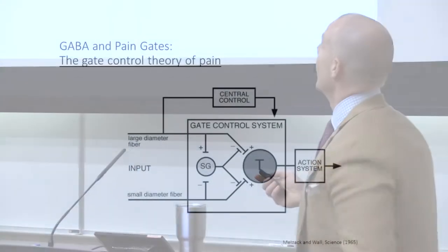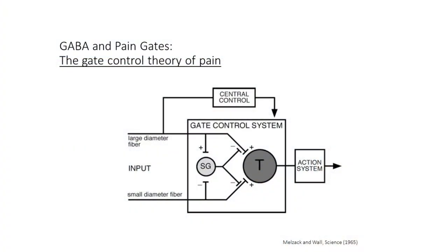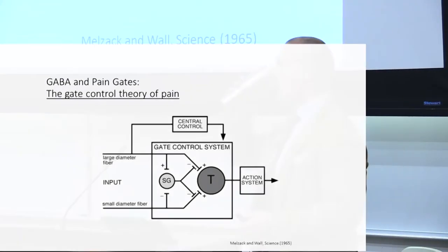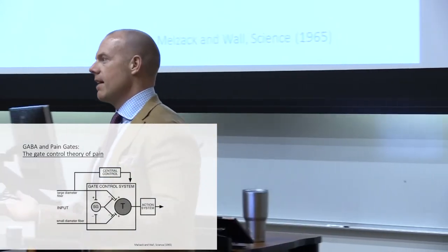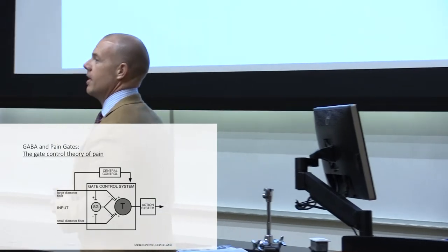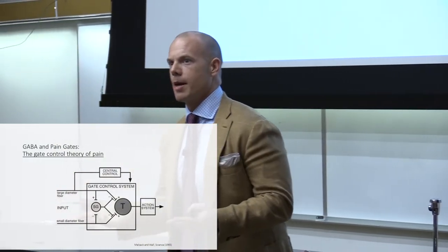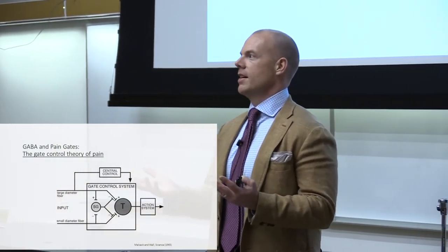Alright. So what we're going to talk about today is touch-evoked pain — or mechanical allodynia — which is a very prominent feature of many types of chronic pain, in particular neuropathic pain. This particular type of pain really drives patients pretty crazy, because lots of things they encounter in their daily life now cause them pain basically constantly. And that can be as simple as just wearing clothes.